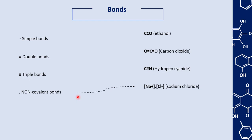To represent non-covalent bonds, we use a dot. Here we have sodium chloride, which is an ionic compound. Sodium chloride is formed by ionic bonds between sodium and chlorine. We represent the ions inside square brackets, and to separate these ions we place a dot between them.